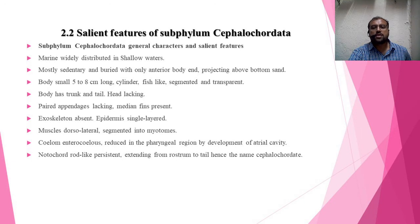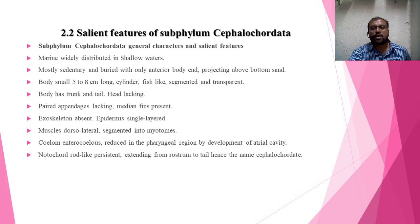The notochord is rod-like and persistent, extending from the rostrum to the tail — from anterior to posterior — and it is dorsal in position. Hence the name Cephalochordata.